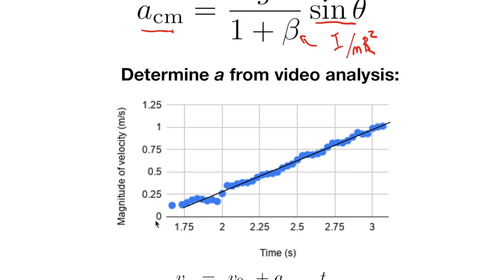Here you just go ahead and measure the acceleration by comparing the magnitude of velocity as a function of time and then fitting a straight line to that using the linest function in Excel or Google Sheets.